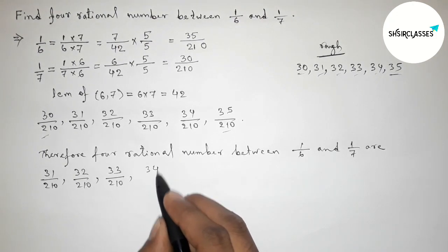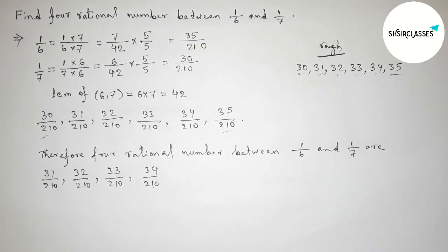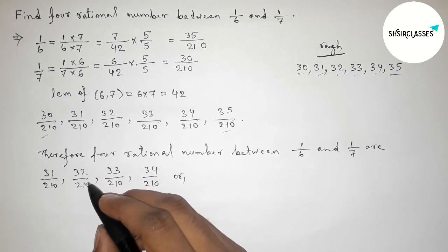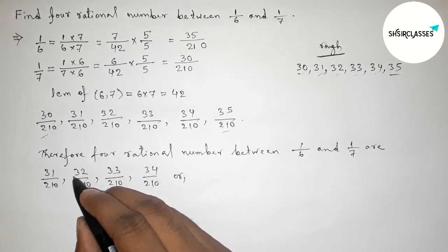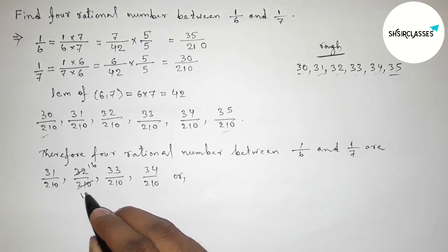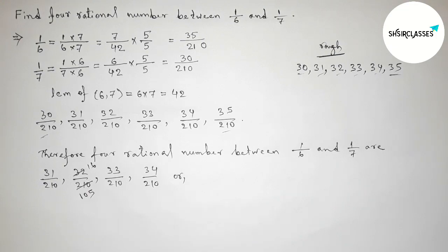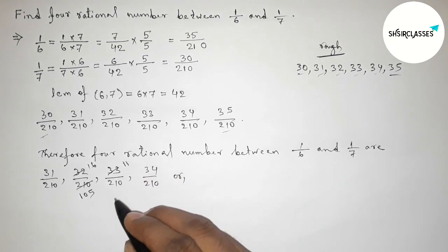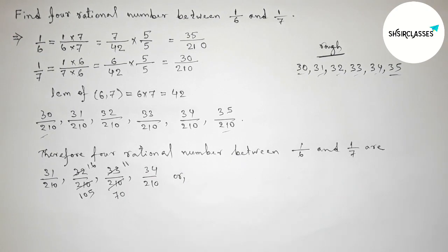We can also simplify. Now dividing both numbers 32 and 210 by 2, so this is 16 by 105. Again dividing both numbers by 3, so 11 times 3 is 33, and this is 70.